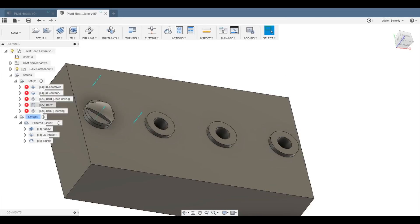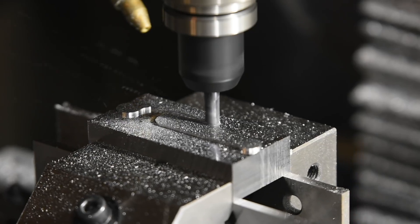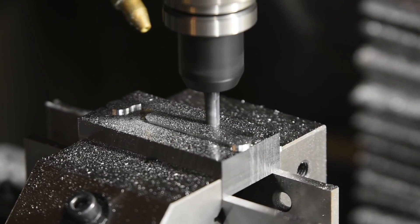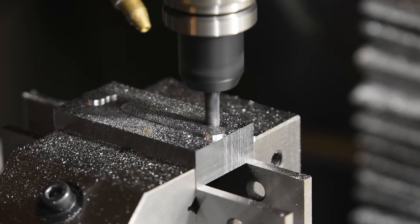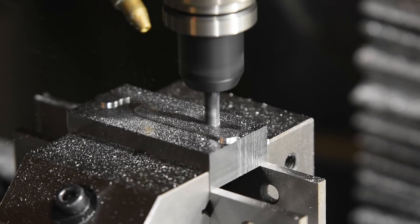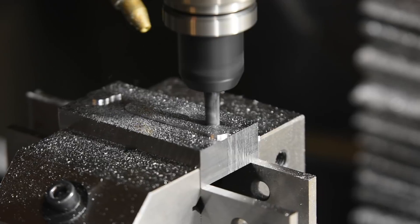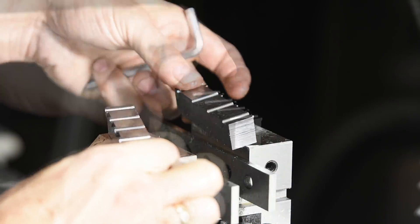Four little holes, little bosses that would allow the tools to get all the way around it without crunching into the fixture. Pretty simple idea. I surfaced around the blank square, then set them up as a pair, faced them, pocket, drill, ream, boom, then you've got it done.